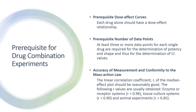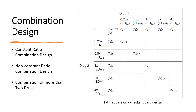For enzyme or receptor systems, a linear correlation coefficient of more than 0.96 is recommended. For tissue culture systems, the linear correlation coefficient should be more than 0.90. For animal experiments, a linear correlation coefficient of more than 0.85 is considered good. The most efficient way for experimental design is to choose the combination drugs at their equivalent ratio, such as at the ratio of their IC50.